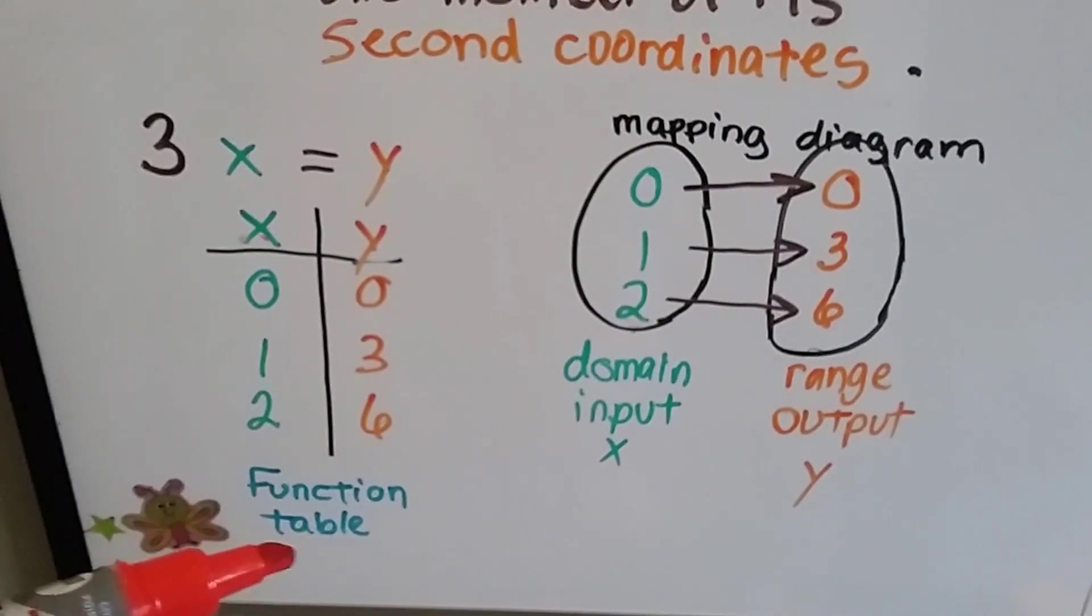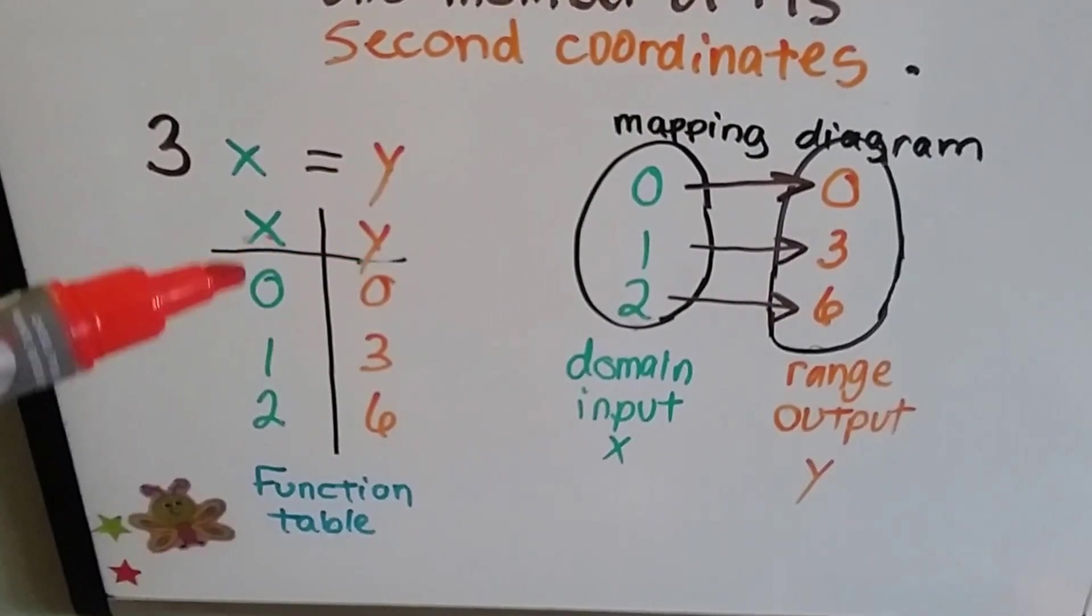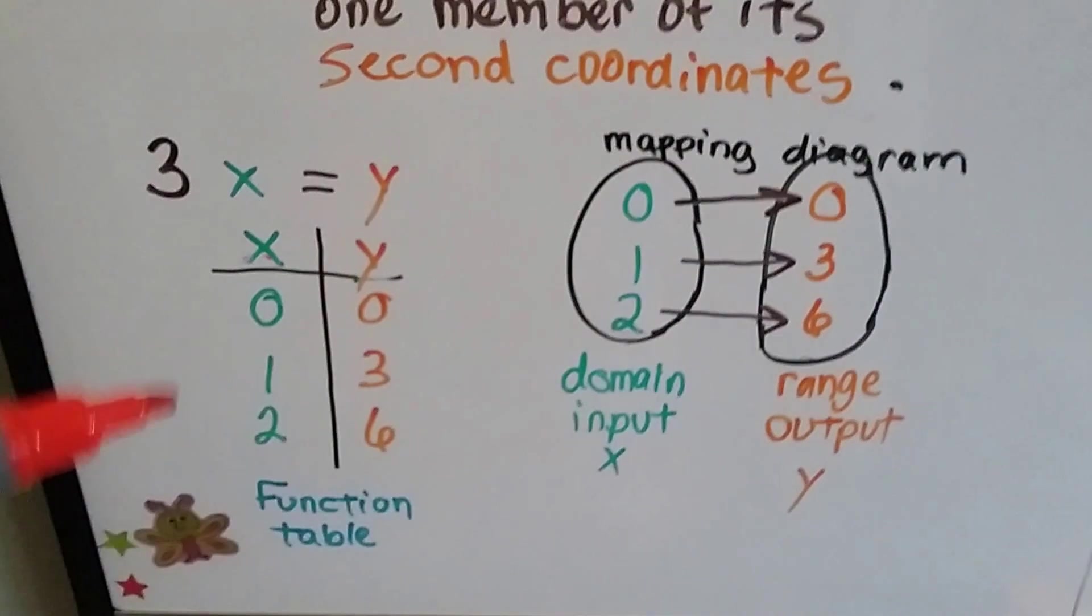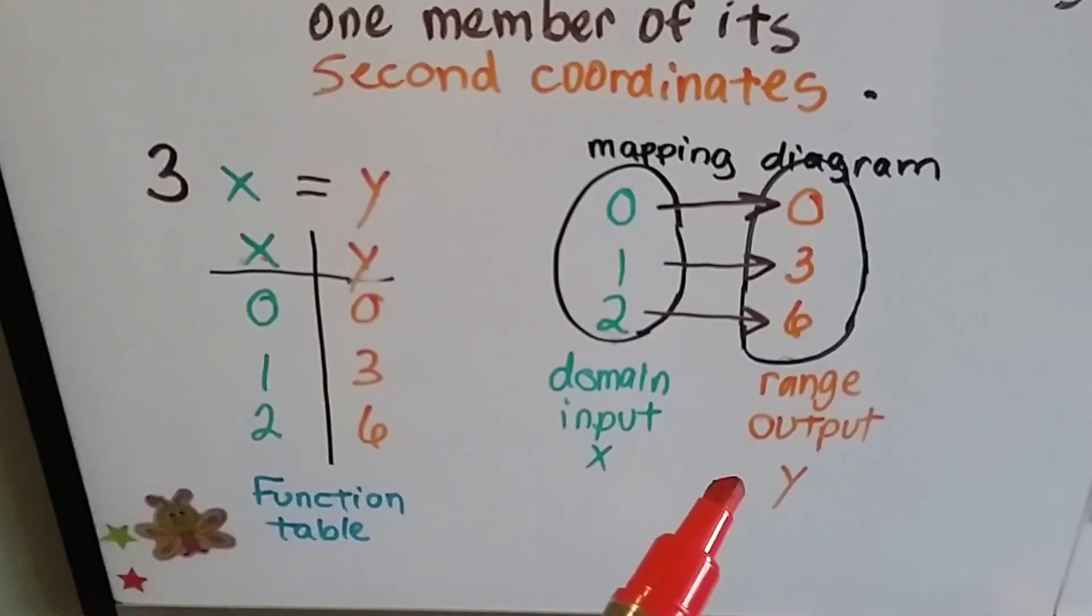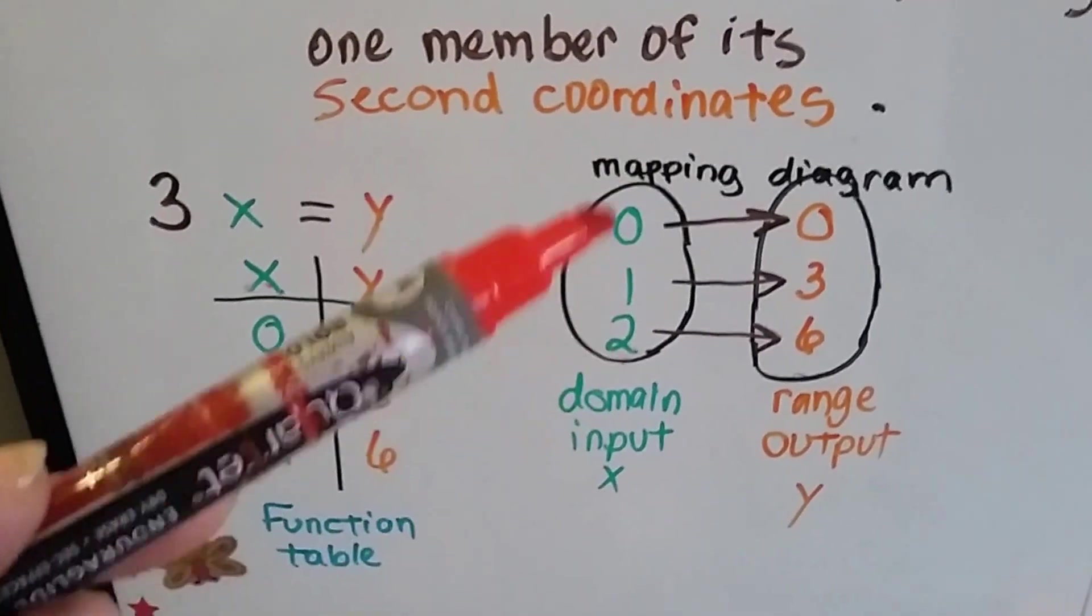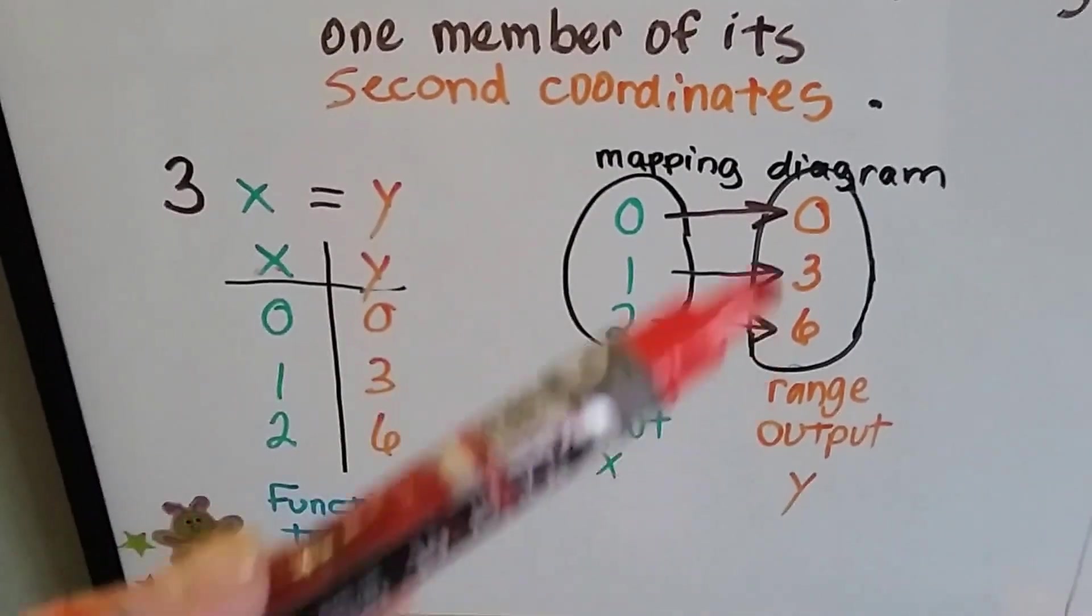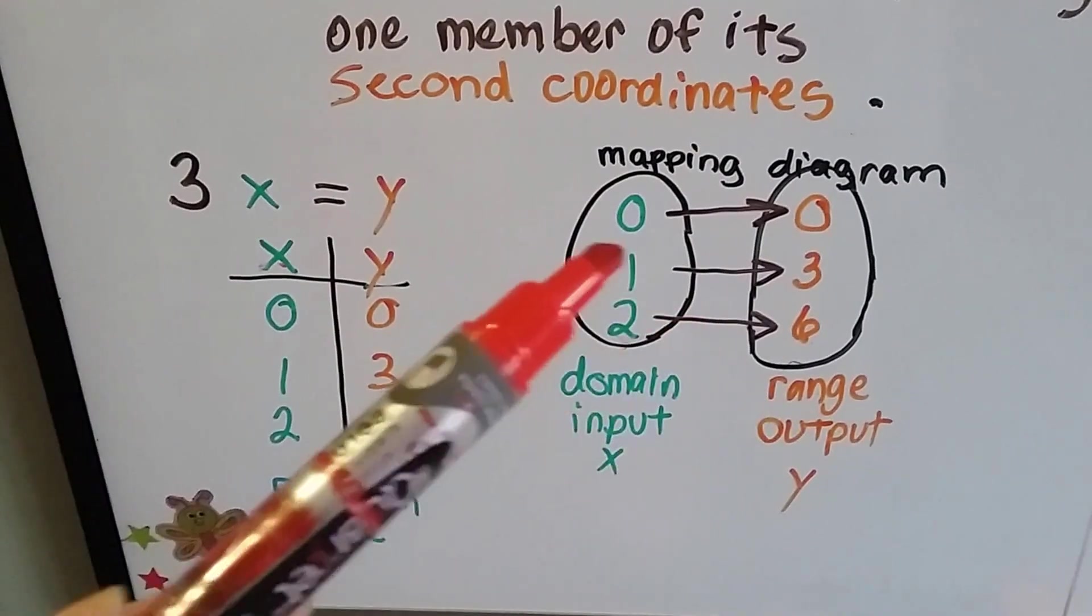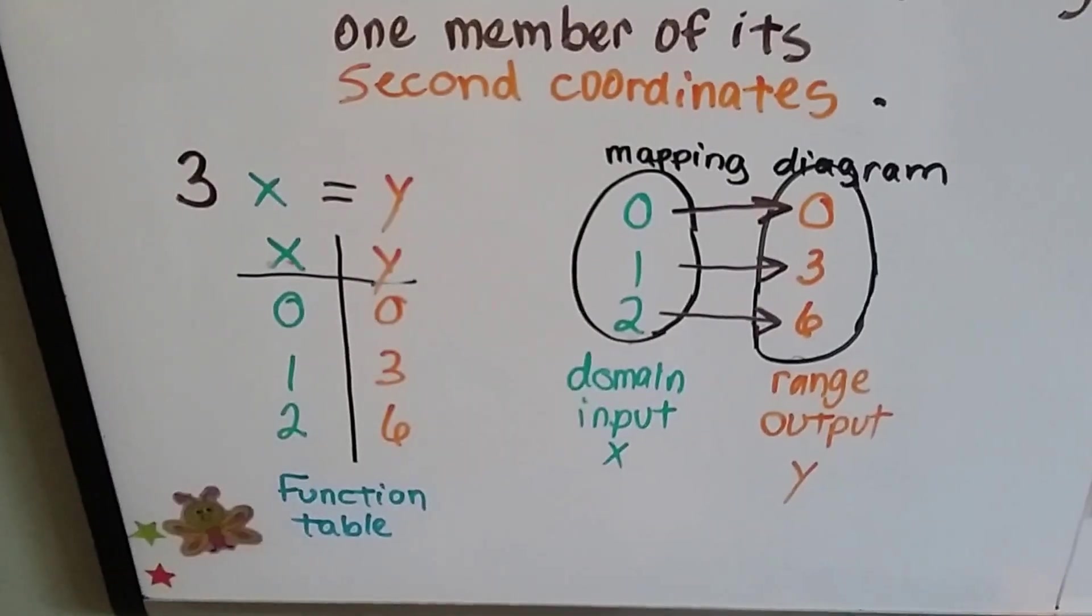We can write it in a function table like this. This side is the domain. That's the range. That's the input. That's the output. We'll get into that a little bit more. You can also do a mapping diagram with two ovals. And you put the domain or input on one side and the range or output on the other side and you draw arrows to which ones they match.